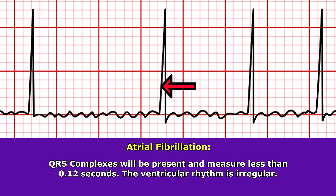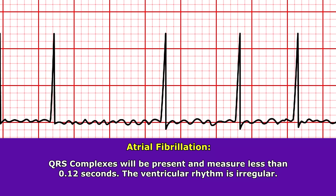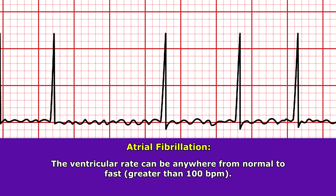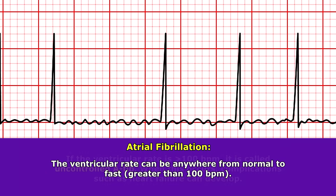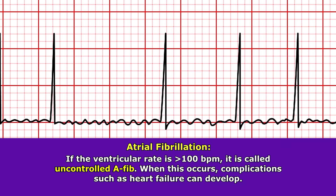When you look at the QRS complexes, they will be present and they should measure less than 0.12 seconds. The QRS complex tells us about the ventricular rate and rhythm. The rhythm is going to be irregular, and the rate can be anywhere from normal to fast — greater than 100 beats per minute. If it's greater than 100 beats per minute, it's termed uncontrolled AFib.